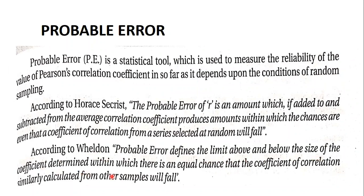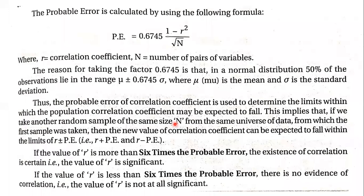By Weldon's definition, probable error defines the limits above and below the correlation coefficient within which there is an equal chance that a coefficient similarly calculated from other samples will fall. The formula for probable error is: 0.6745 — a constant — multiplied by (1 minus r-square) divided by square root of n, where r is the correlation coefficient and n is the number of pairs.